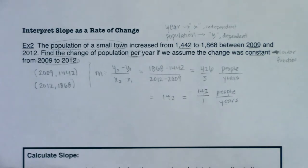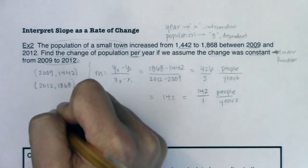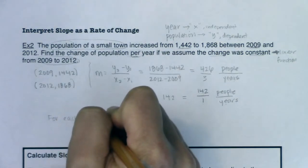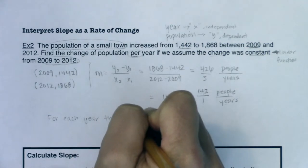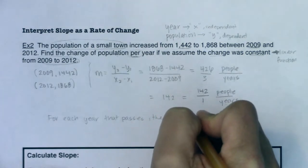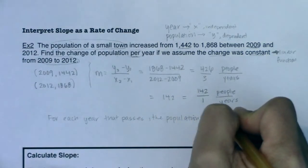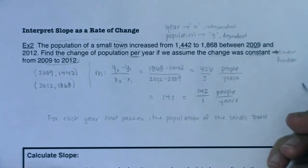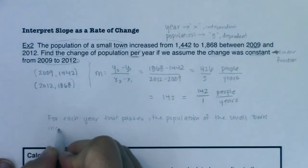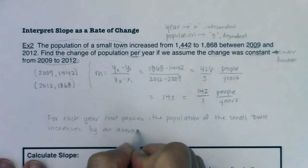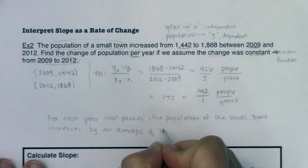So let's say we wanted to write this as a sentence. I would say for each year that passes, the population of the small town - now it's increasing because the slope is positive - so I would say increases by an average of 142 people.